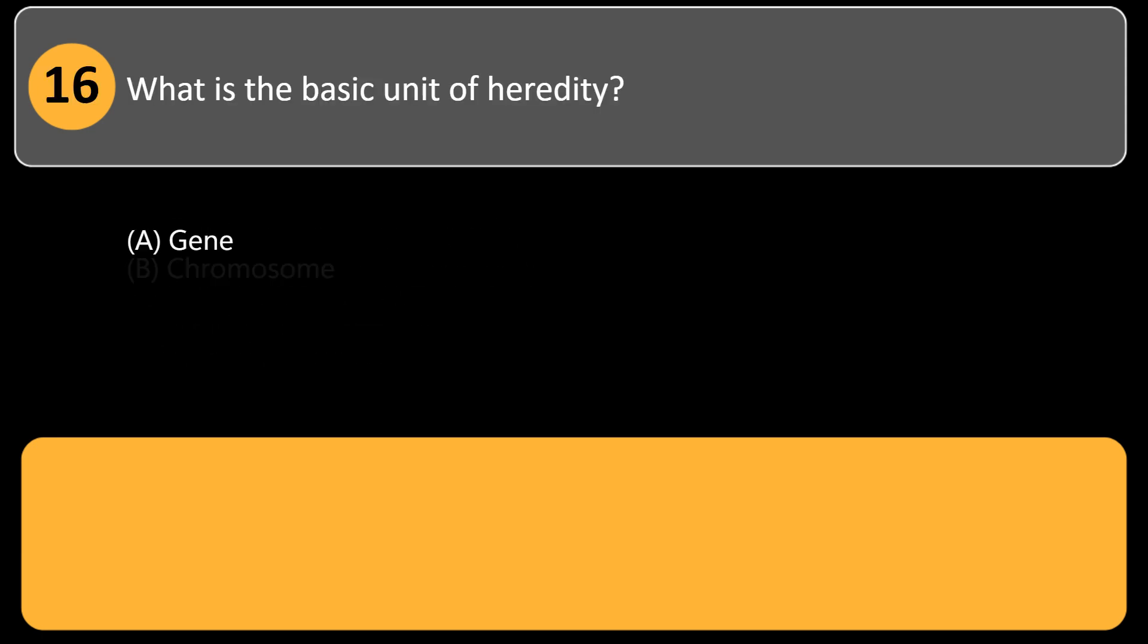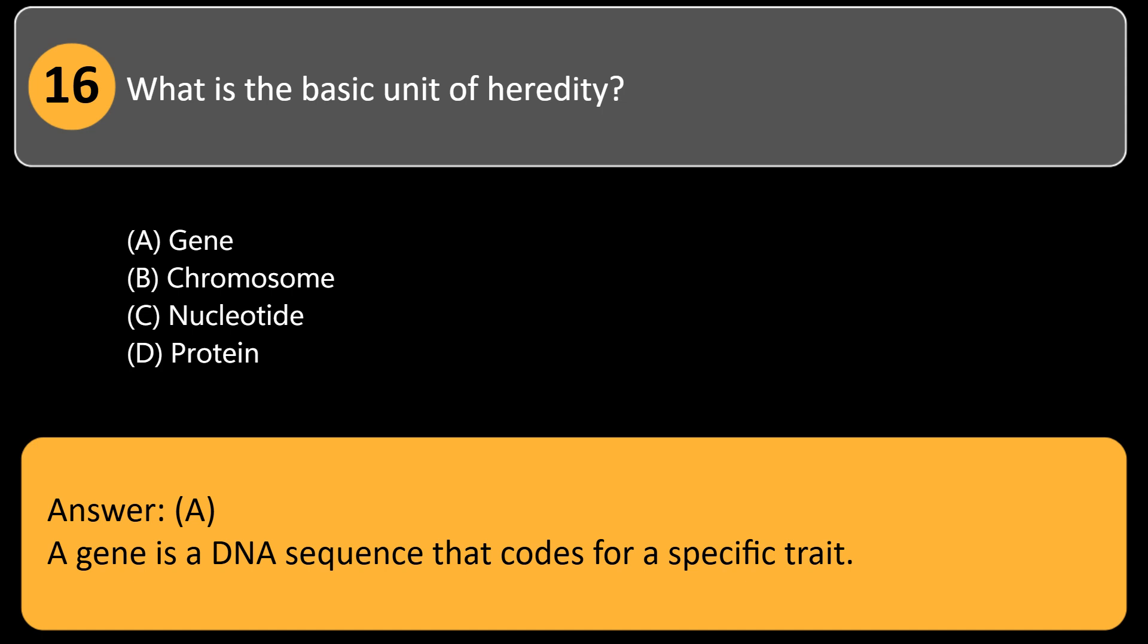What is the basic unit of heredity? A. Gene, B. Chromosome, C. Nucleotide, D. Protein. Answer: A. A gene is a DNA sequence that codes for a specific trait.